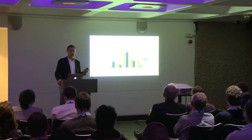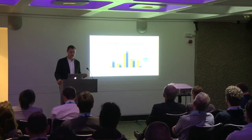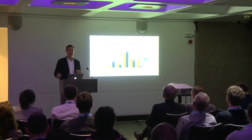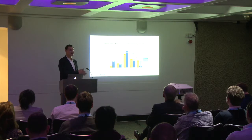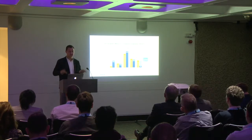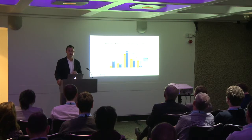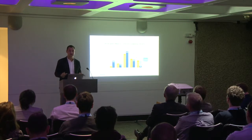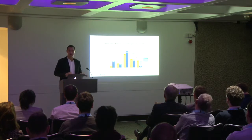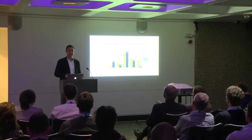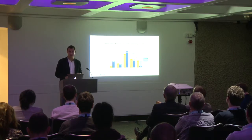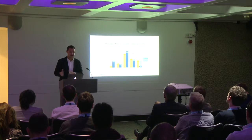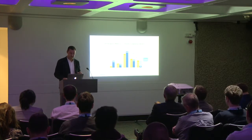This is probably Mary Meeker's most famous chart. It really shows time spent with different types of media versus ad spend going towards those different types of media. A couple of things stand out. About 5% of media consumption time is spent on print, but it still attracts about 19% of ad spend. Meanwhile, about 20% of media consumption time is spent on mobile, but only 4% of ad spend goes towards mobile. The data tells us that ad spend is going to continue to move to mobile until these things even out a little bit.